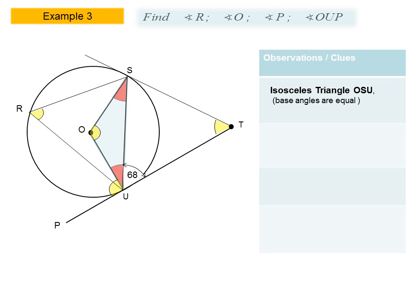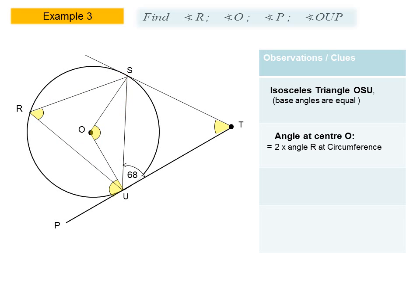Our first clue is we see an isosceles triangle OSU — the base angles are equal, so we may need to apply that later. Our second clue is that we may need to apply the angle at the center theorem, since that angle is subtended from chord SU, and there is also an angle at the circumference subtended from the same chord SU.